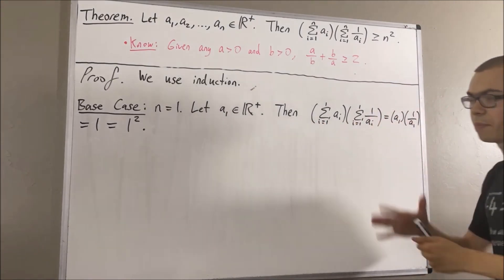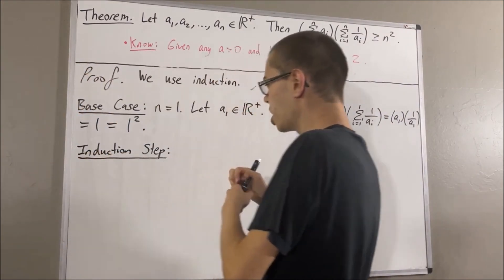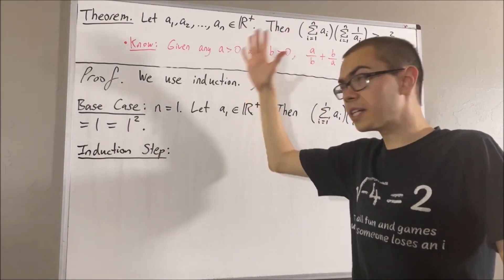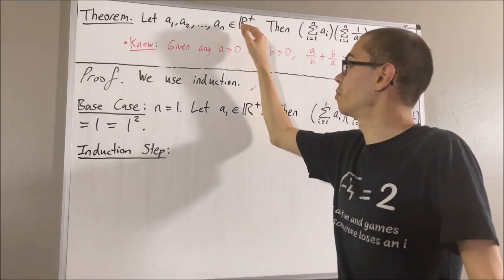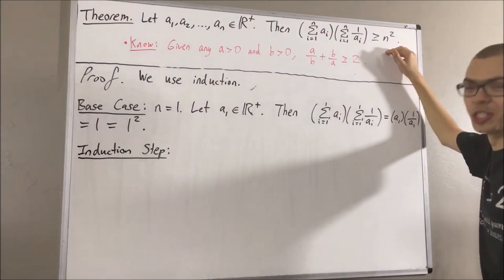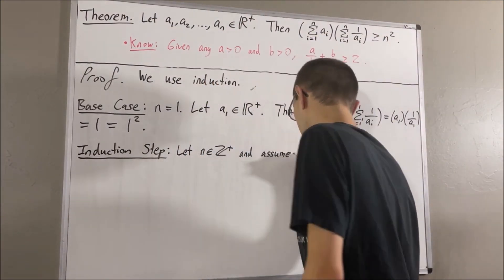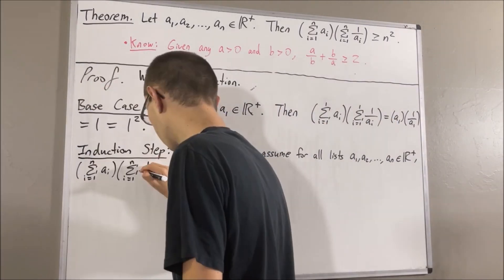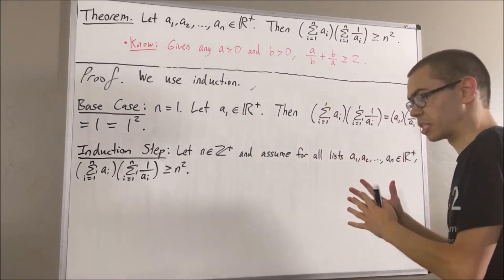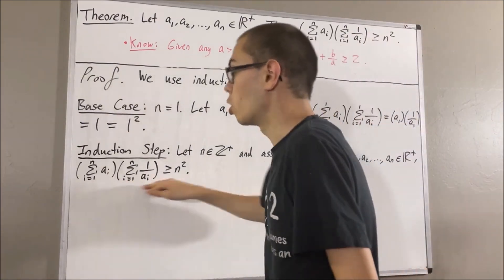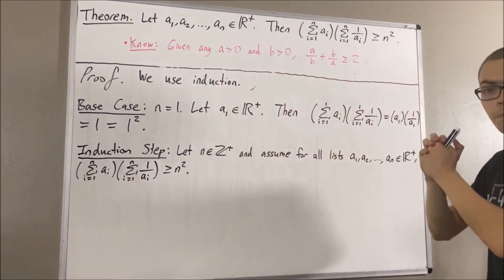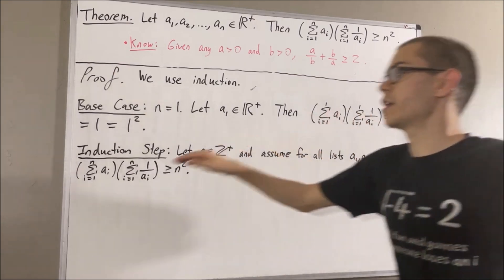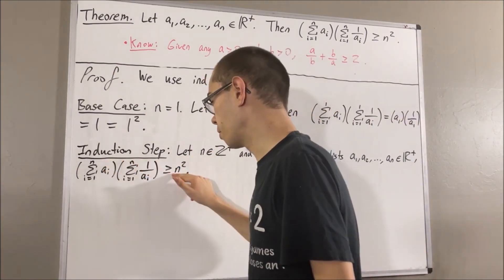Now, let's move on to the induction step. In the induction step, we give ourselves an arbitrary positive integer n. And we're assuming, for all lists consisting of n positive real numbers, we have that this inequality is true. The whole goal of the induction step at this point is to show that this is also true, where instead of n, we have n plus 1. So, really, we're trying to show, for all lists consisting of n plus 1 positive real numbers, this inequality holds, where instead of n, we have n plus 1.